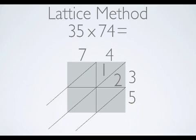The next intersection is 7 in 3. 7 times 3 is 21, and I will record my answer like this. 2 tens above the diagonal and 1 one below the diagonal.